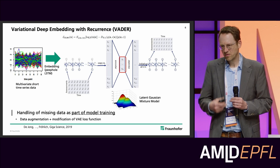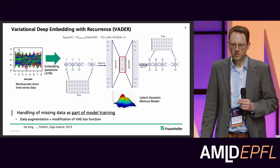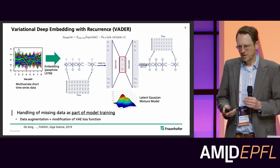Therefore, the optimization criterion — the ELBO criterion — which you may be aware of from a variational autoencoder, is modified to incorporate the KL divergence to a Gaussian mixture model as a prior.